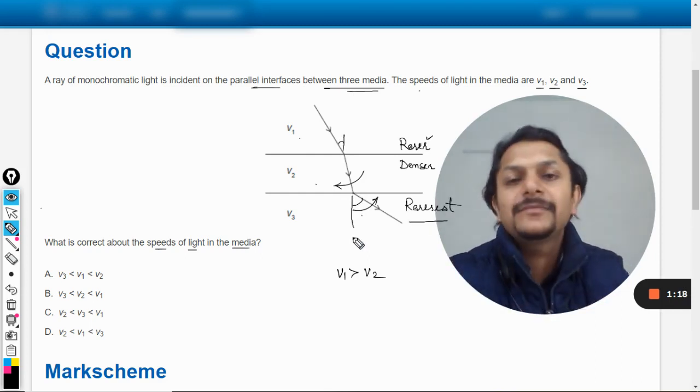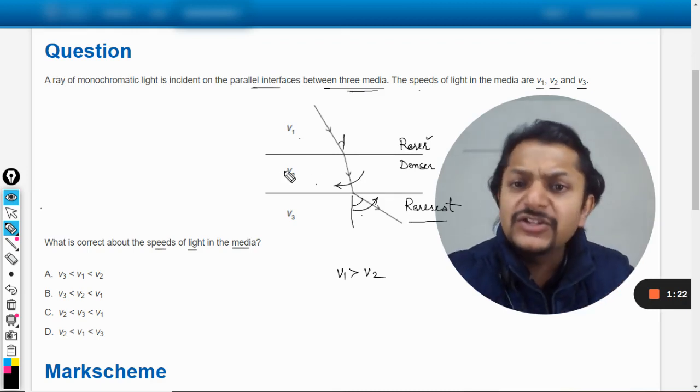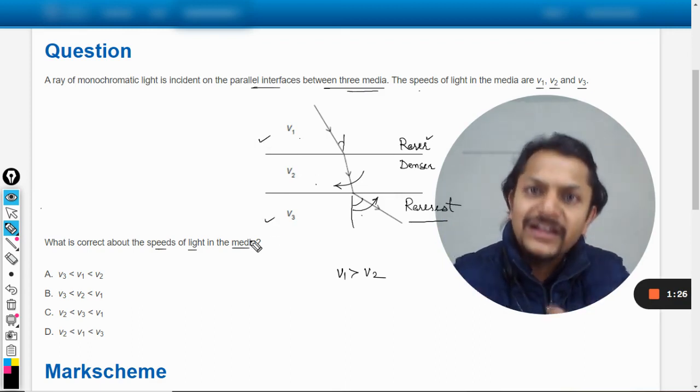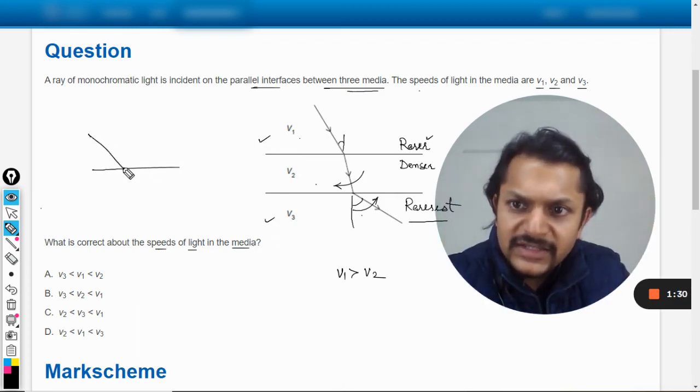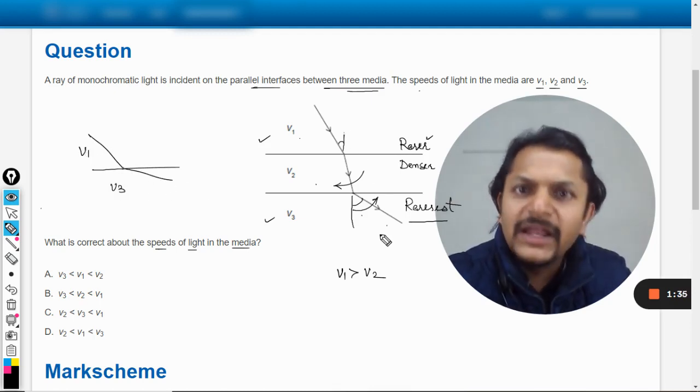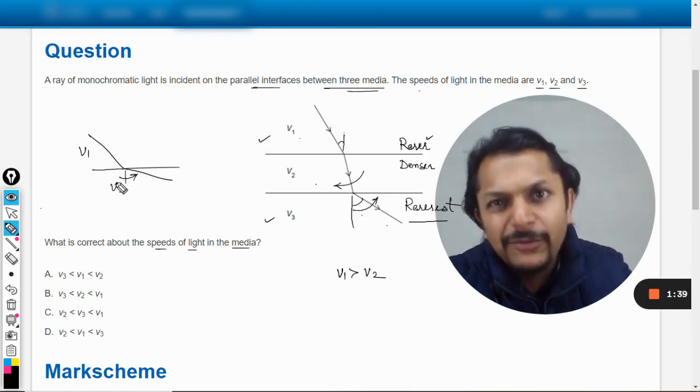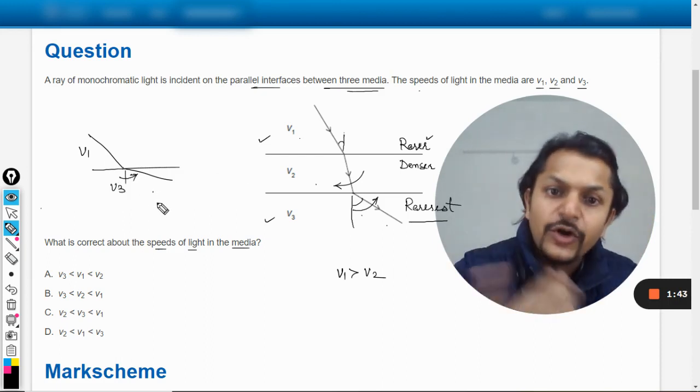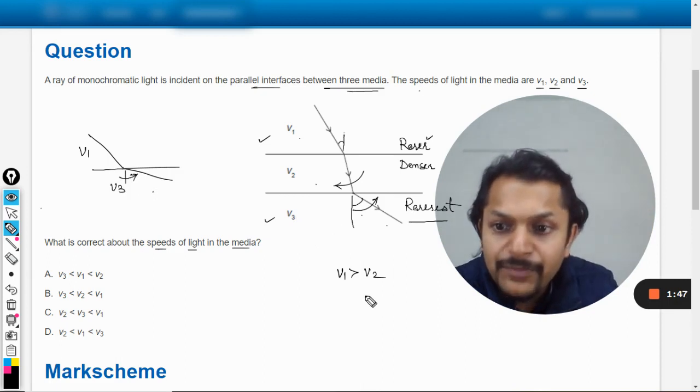If this becomes the rarest, for example if there is no second medium and the light is coming from the first medium directly entering into the third medium - let's say the light is coming like this, this is v1 and this is v3 - the diagram will be like this. It means it would be moving away from the normal even in that case, so I can say that this will be the rarest of all. So v3 will be greater than all of them.